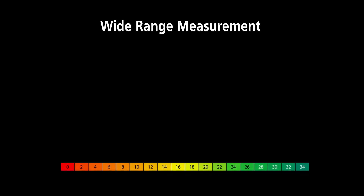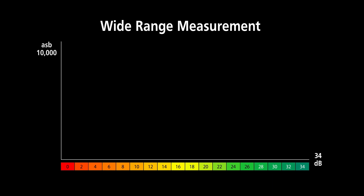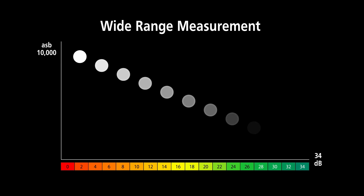Stimulus intensity ranges from 10 to 10,000 apostilbs, ensuring a wide range of measurements from 0 to 34 decibels. A maximum intensity of 10,000 apostilbs allows detection of deep scotomas. A wide dynamic range of 34 decibels ensures detection of clinically subtle scotomas in early vision loss.